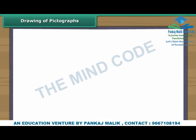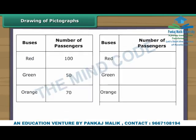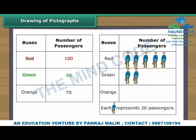Drawing of pictographs. Let us draw a pictograph with the help of the given data. We use the picture of a travelling man to represent bus passengers. As the numbers are large, one picture represents 20 passengers. The red bus carried 100 passengers, so five pictures represent 100 passengers. The green bus carried 50 passengers — two pictures represent 40 passengers and half a picture represents the remaining 10. The orange bus carried 70 passengers — three pictures represent 60 passengers and half a picture represents the remaining 10.